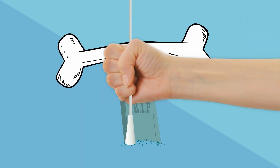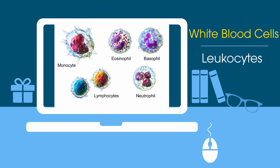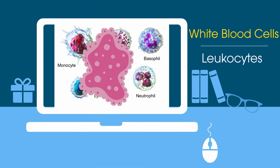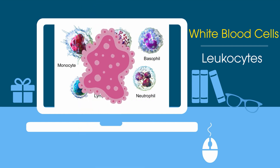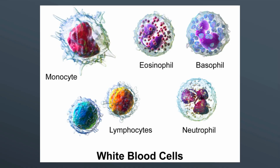White blood cells, also called leukocytes, are an important part of the immune system. These cells help fight infections by attacking bacteria, viruses, and germs. White blood cells originate in the bone marrow but circulate throughout the blood, and there are five major types of white blood cells.